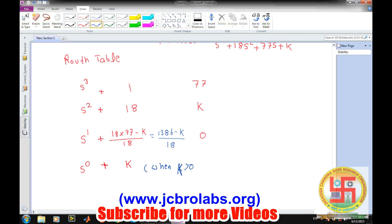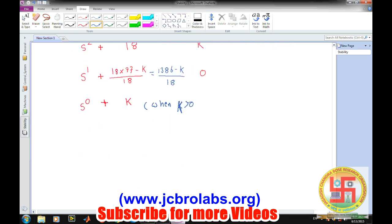Now in order to extract the upper bound we have another variable in terms of K. We will consider this number should also be greater than 0, so 1386 minus K divided by 18 should be greater than 0, so K should be less than 1386. So here comes our condition.